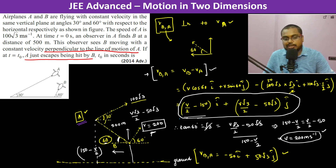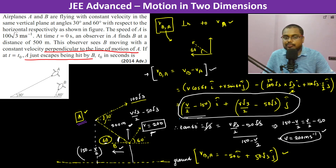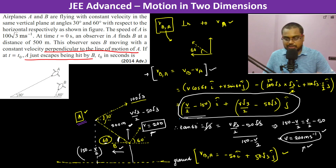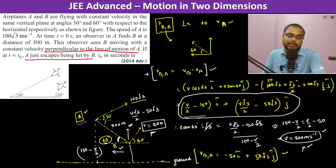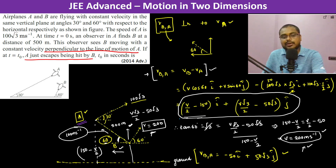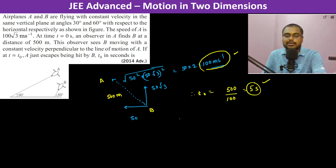60 degrees is V_Y divided by minus V_X. So therefore we put a negative sign here. Velocity of B comes out to 200. The velocity of B with respect to A in this direction comes out to be 100 meter per second. So therefore, since it is at 500 meters, 500 divided by 100 is going to be 5 seconds. Thank you.